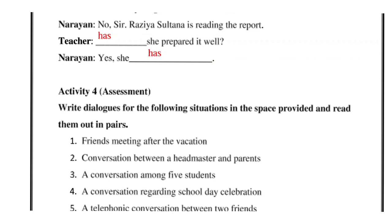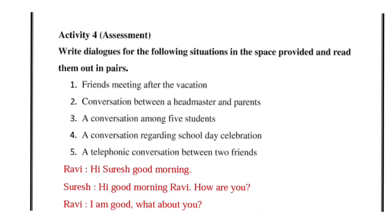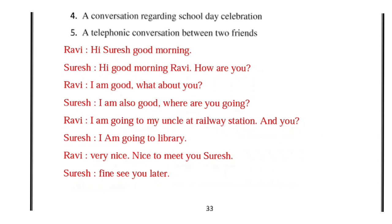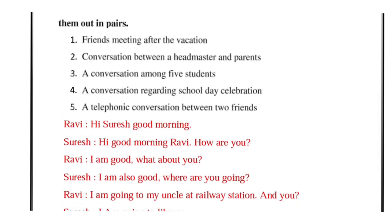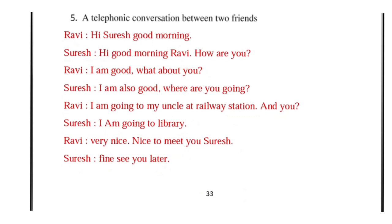Activity 4: Write the dialogues for the following situations in the space provided and read them out in pairs. Situations include: friends meeting after vacation, conversation between a headmaster and parents, a conversation among five students regarding school day celebration, and a telephonic conversation between two friends. Here is an example conversation — Ravi: Hi Suresh, good morning. Suresh: Hi good morning Ravi, how are you? Ravi: I am good, what about you? Suresh: I am also good. Where are you going? Ravi: I am going to my uncle at the railway station. And you? Suresh: I am going to the library. Ravi: Very nice. Nice to meet you Suresh. Suresh: Fine, see you later.